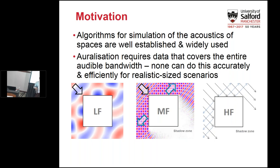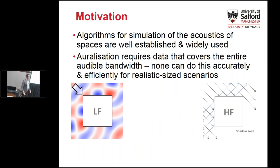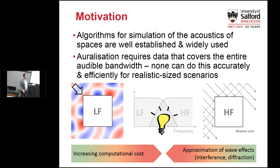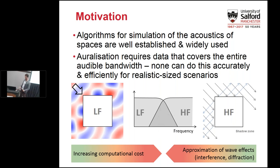What we really need is a full bandwidth model, particularly for early reflections, but we don't have that at the minute. These methods all have limitations: low frequency methods see rapidly increasing computational cost with frequency, while high frequency methods approximate wave effects like interference and diffraction, if they include them at all. A simple solution is to use each method in its best band and combine them — essentially like a loudspeaker crossover — and that's more or less what I'm going to talk about today.